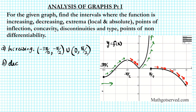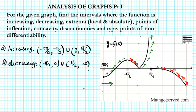How about decreasing? Where is the slope of the tangent line negative? It's decreasing from negative π/2 to 0, and then from π/2 all the way to infinity. This keeps decreasing forever — you can tell by the pattern that it keeps decreasing forever.